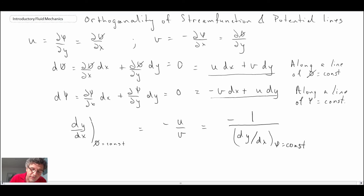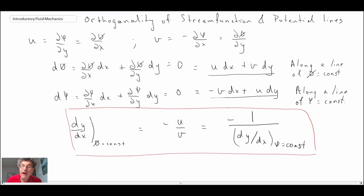So they are mutually orthogonal to one another, the stream functions and the potential functions. And let's take a look at the velocity field that we were working with earlier.